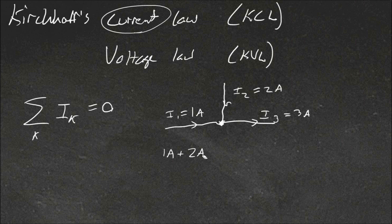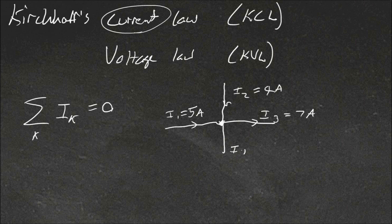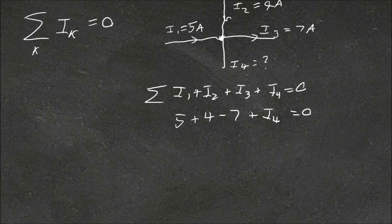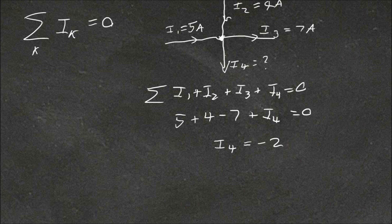Say for this example we had another cable, so at this node there was another cable going down. We'll change these values: this one's 5 amps, this one's 4 amps, and this one's 7 amps, but we didn't know what I4 is. We know that the summation of I1 plus I2 plus I3 plus I4 equals zero. So 5 plus 4 minus 7 plus whatever I4 is equals zero. This is just simple algebra, and we can rearrange to find that I4 is equal to minus 2, meaning I4 must have a current leaving the node, and it's 2 amps.